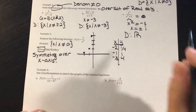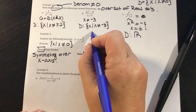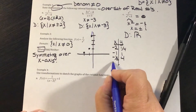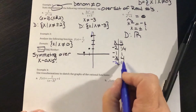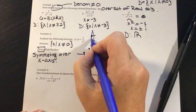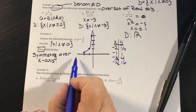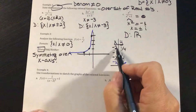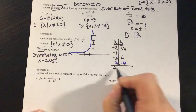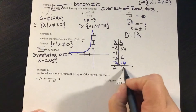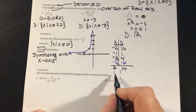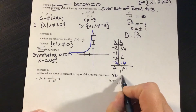The graph is rising steeply as we get closer to 0. If I pick negative one-fourth, I would get 16 — so it keeps getting closer to 0 on the x-axis. For larger numbers, the graph approaches the x-axis. For positive values: X equals 2 gives one-fourth, X equals 1 gives 1, X equals one-half gives positive 4.